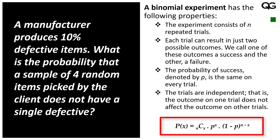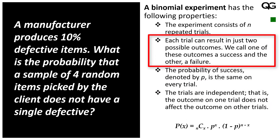In a binomial experiment, 'bi' means 2, so there must be 2 possible outcomes — pass or fail, good or bad, yes or no. In this example, items are either defective or not defective. When we pick 4 items, each item could have 2 outcomes. This is one property of binomial distribution: each trial should have just 2 possible outcomes.